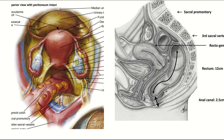This is the sagittal section of the pelvic organs and a picture taken from superiorly showing the female pelvis. This is the urinary bladder — its superior surface is covered by peritoneum. This is the vesicouterine pouch, this is the pouch of Douglas, and this is the sigmoid colon followed by the rectum. Note that only the superior surface of the urinary bladder is covered by peritoneum; the base of the urinary bladder is not covered by peritoneum.